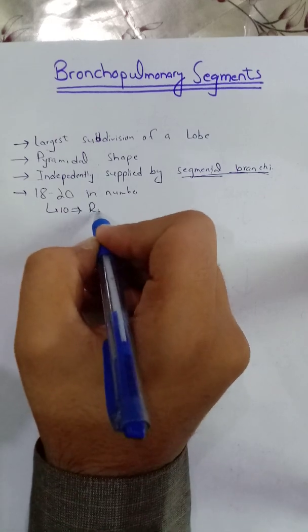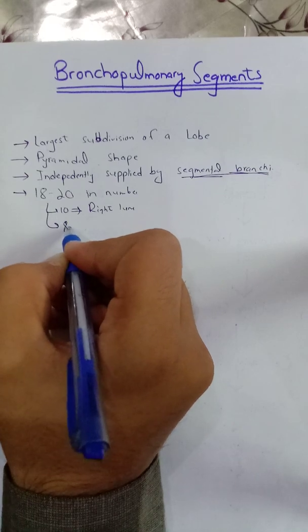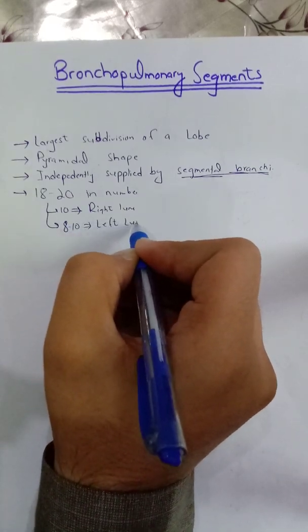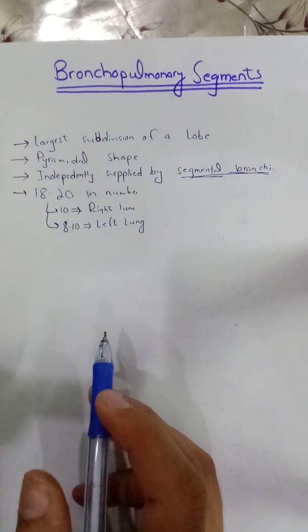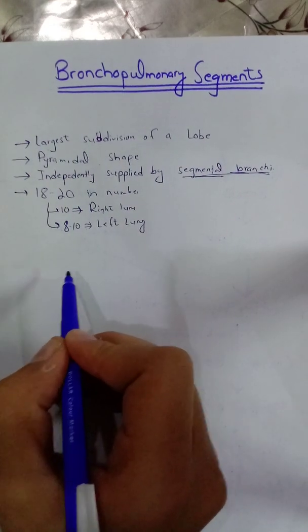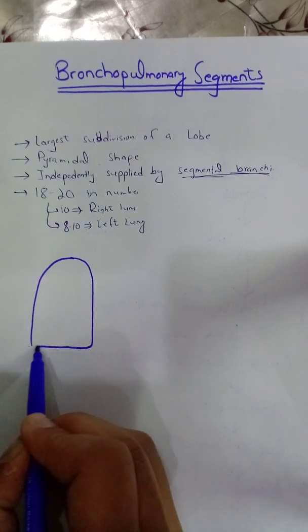Ten in the right lung and 8 to 10 in the left lung. Now we will see it in the form of a diagram. First of all, we will have to draw the right and left lung. This is the right lung.